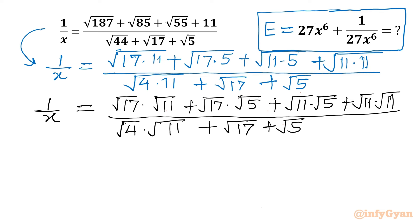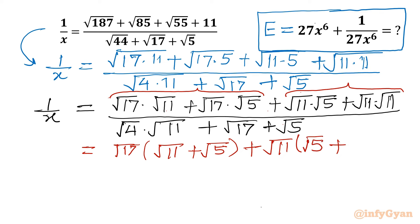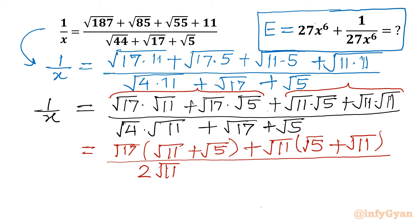Now from the first two terms you can see root 17 is common. So from here I will take root 17 common, and from here I will take root 11 common. So root 17 in bracket gives root 11 plus root 5. Similarly root 11 is common, so in bracket it will become root 5 plus root 11. The denominator: root 4 is 2, so I will write 2 times root 11 plus root 17 plus root 5.